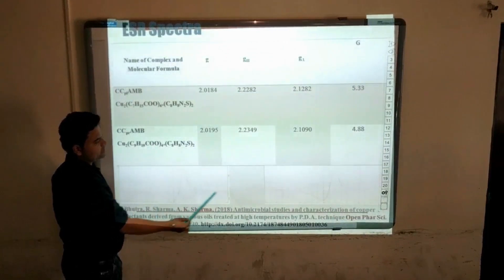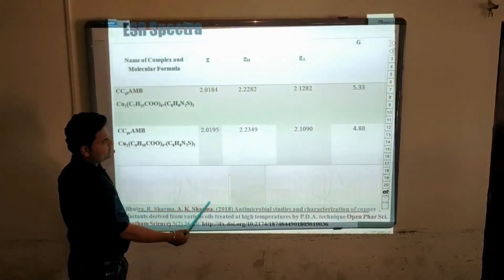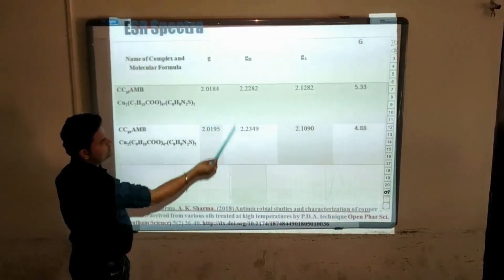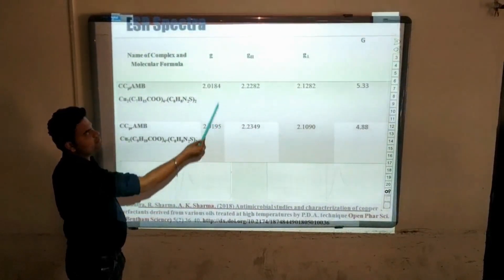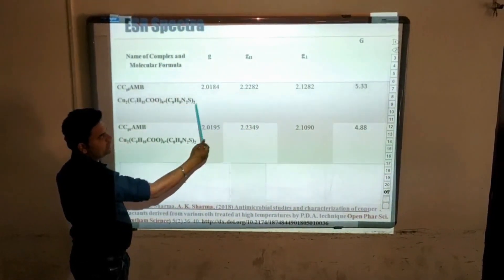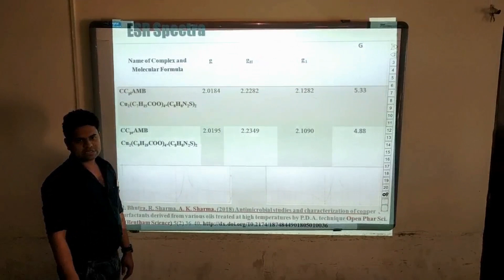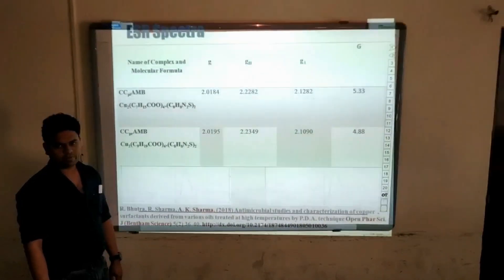These are the results of ESR spectra and from these spectra we calculate G values and here we can see that G parallel and perpendicular values are greater than G values, which suggests us that there is some distortion in our octahedral complex.